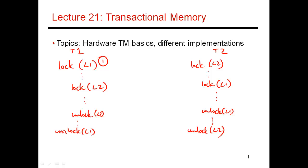If thread one acquires L1 first, then thread two acquires L2, then thread one tries to acquire L2 — that will never be fulfilled because L2 is currently held by thread two. And thread two is not going to release L2; instead, it's trying to acquire L1, which is held by thread one. So you have a cycle of dependencies where everybody is holding a resource and asking for another, which ultimately leads to a deadlock.